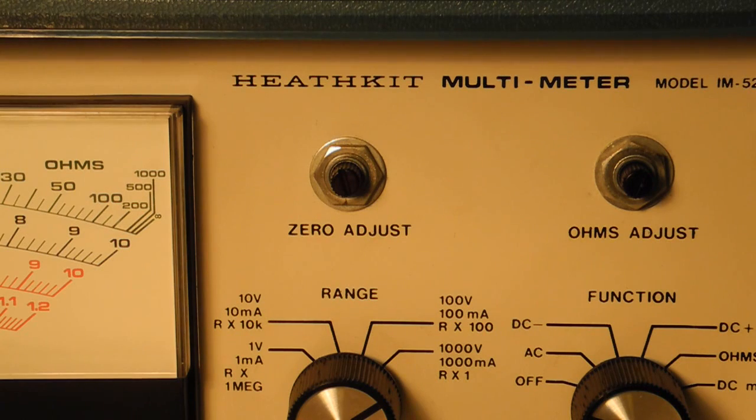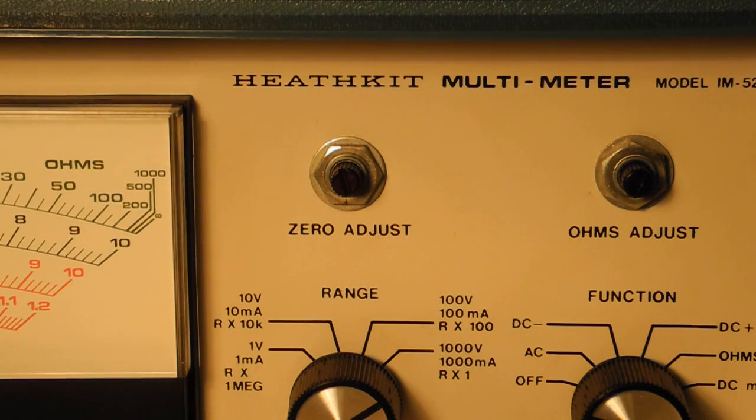The zero adjust knob needs to be adjusted so that the meter reads zero with no input. Typically, you only need to adjust it once and it applies to all functions and ranges. It may need to be adjusted periodically as the batteries run down. The ohms adjust knob is adjusted so that the meter reads full scale when the test leads are open on the ohms function. It also typically only needs to be set periodically.